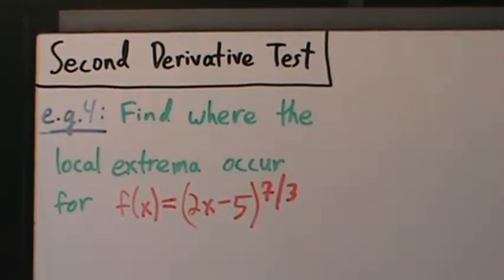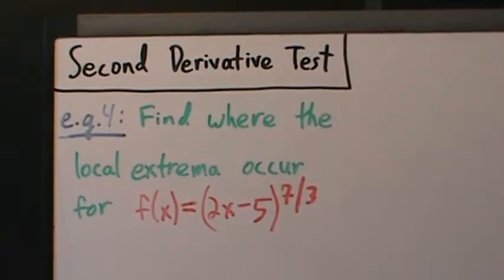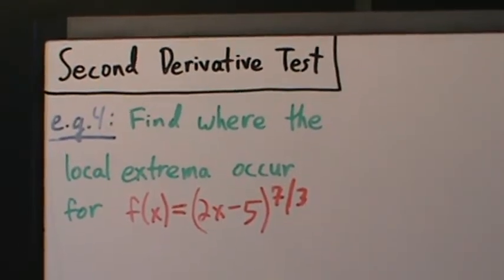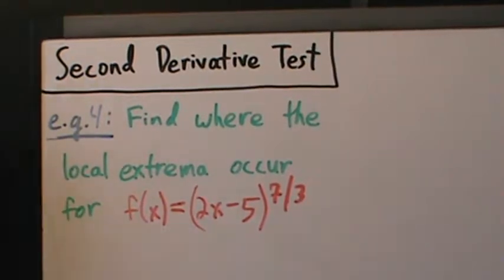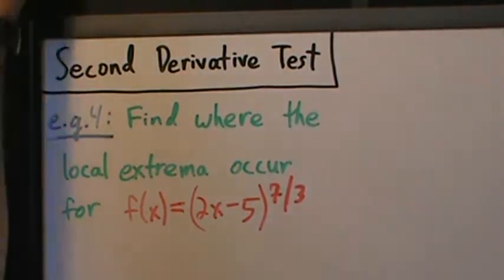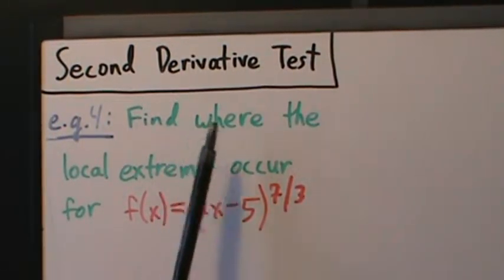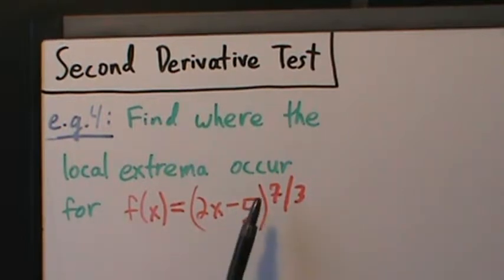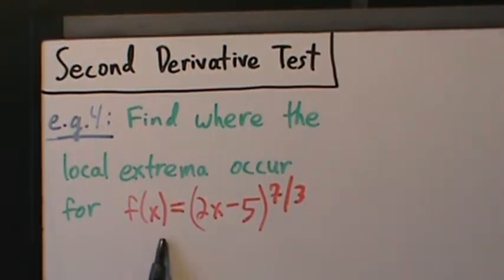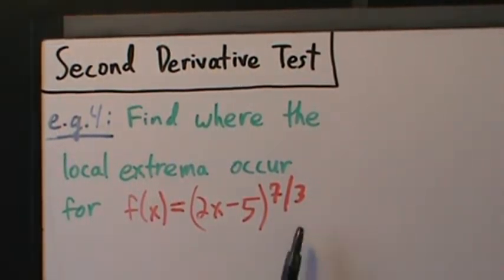Alright, here's Example 4 with the second derivative test, which I think may have been Example 3 with the first derivative test. I might have gotten these mixed up. But anyway, we just want to find where the local extrema occur for this function f(x) = (2x - 5)^(7/3).